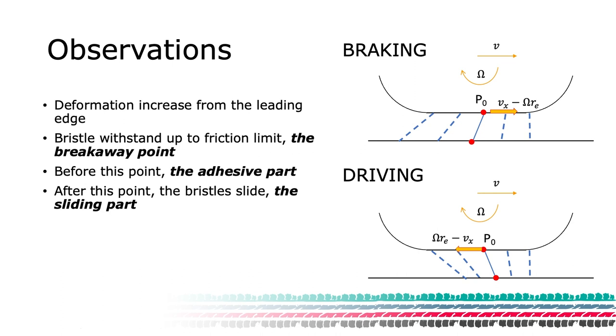The second consequence is based on the friction model assumption and the independence of the bristles. At each point in the contact, the shear stress reaches the friction limit. After this point, the bristles start to slide against the road surface. We can call this point the breakaway point.